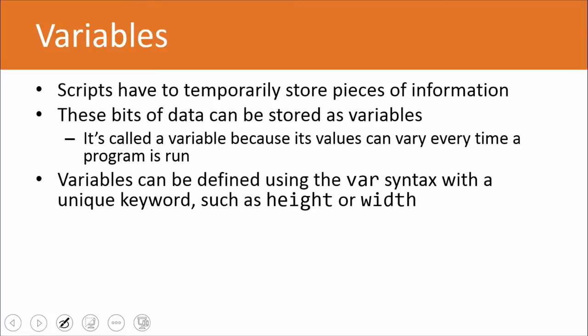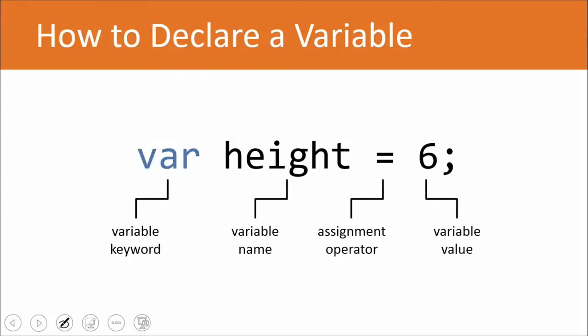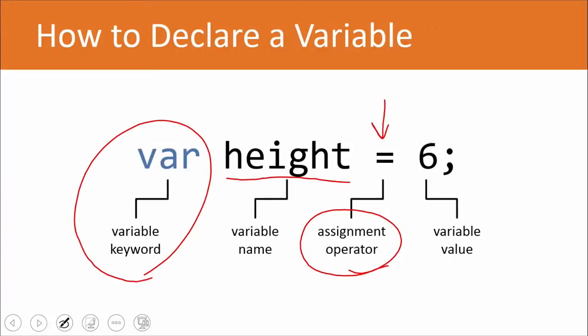Variables are simply defined with the var syntax with a unique keyword such as height or width. And so here I've got an example. You've got your variable keyword. Then you have a name, height. We might want to change it to like building height or ceiling height or something along those lines in order to specify what it happens to be the height of. We have an assignment operator here. It's the equal sign. And so what happens is we're taking the value 6 and we're saying, hey, 6 is going to be temporarily stored in the variable height. And 6, of course, happens to be our variable value here. Just some fun stuff to learn.